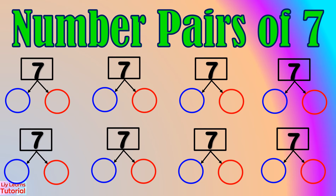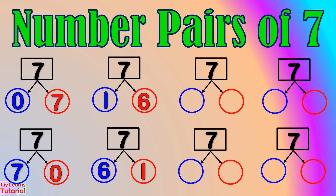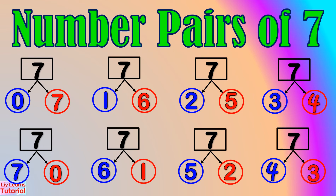The number pairs of 7 are: 0 and 7, 7 and 0, 1 and 6, 6 and 1, 2 and 5, 5 and 2, 3 and 4, 4 and 3.